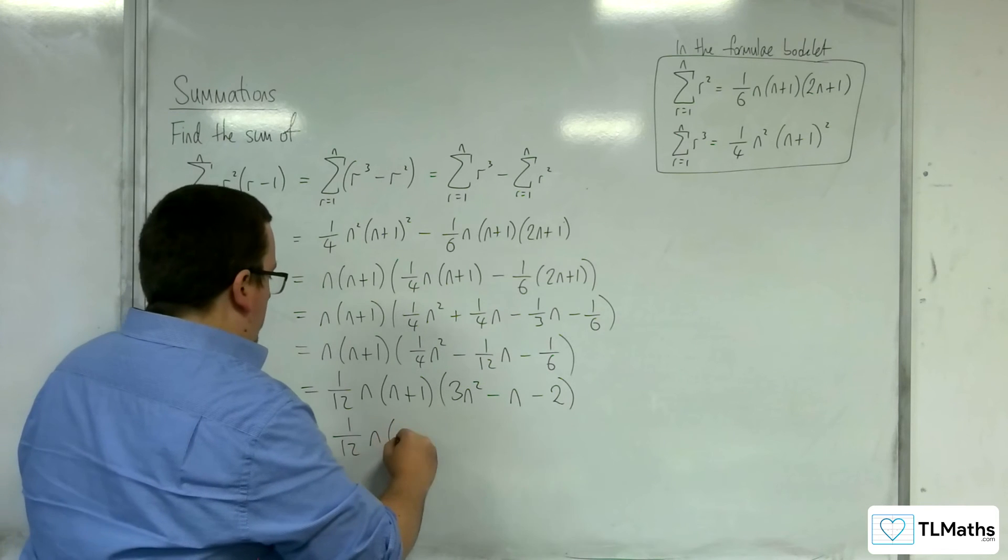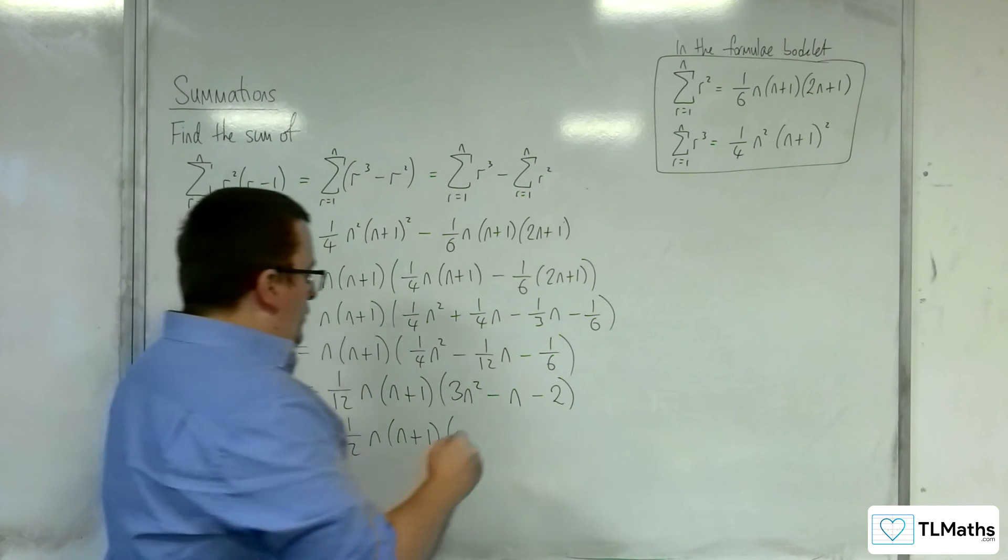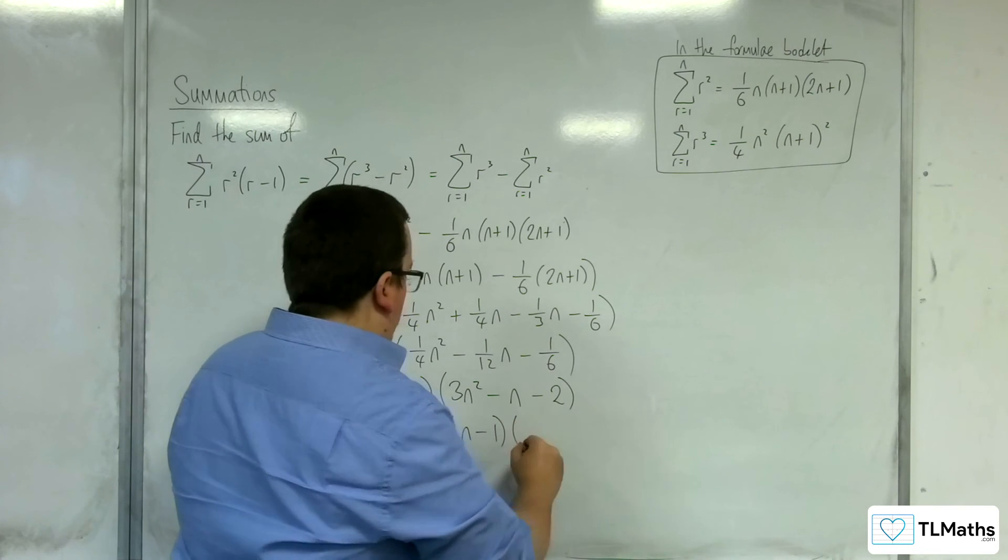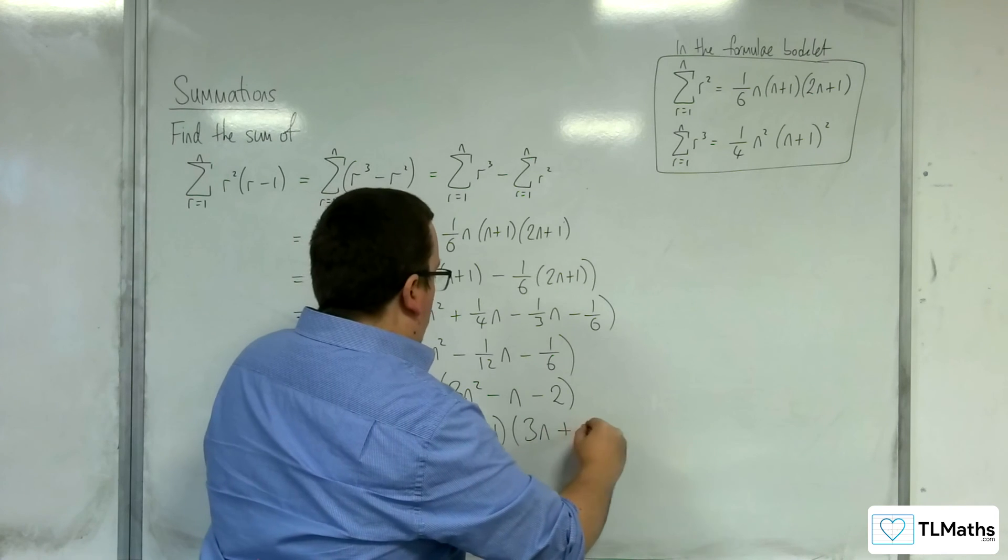So, 1 twelfth n, n plus 1. So, we're getting 1 as a solution, so that means n minus 1. And the other one's got to be, so minus 2 thirds, so 3n plus 2.